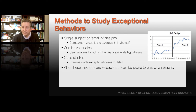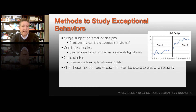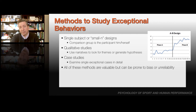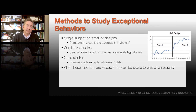We can also do qualitative studies. Qualitative studies don't use the same kind of reliable measurement and observations as most experiments, but use interviews and narratives. We look for themes that emerge to help generate hypotheses or conclusions. Case study is a specific kind of qualitative study where we look at a single case in great detail, trying to account for as many variables as possible in understanding a single individual's performance. All of these methods can be valuable, but they're prone to biases and can be unreliable, so we like to combine them with other research methods.